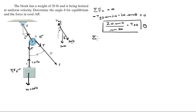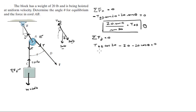The sum of the forces in the Y is also equal to zero. So tension AB times cosine of 20 — the Y component of that force — minus 20, minus 20 cosine of theta equals zero. So tension AB times cosine of 20 minus 20 cosine of theta equals 20, moving the 20 to the other side.